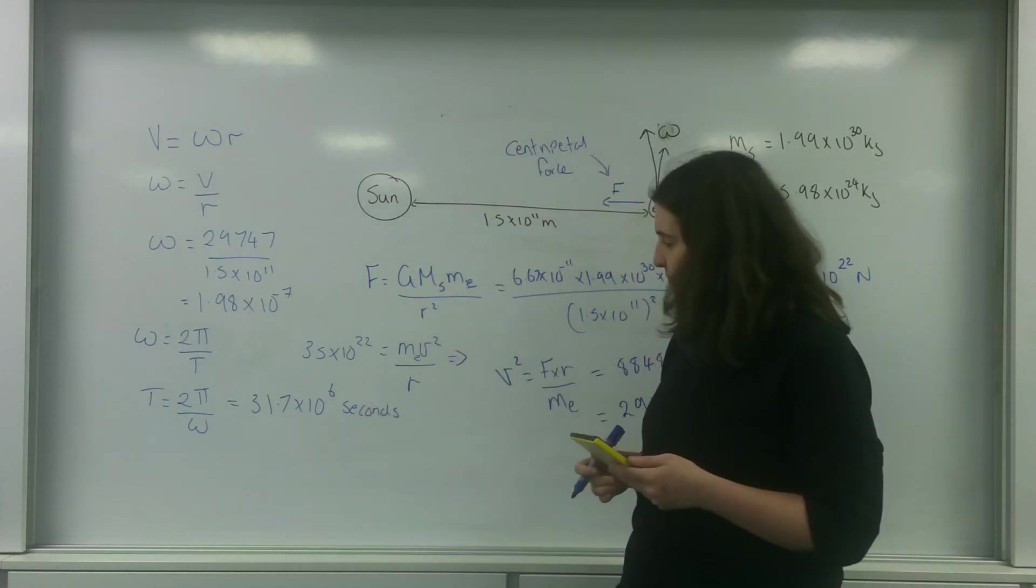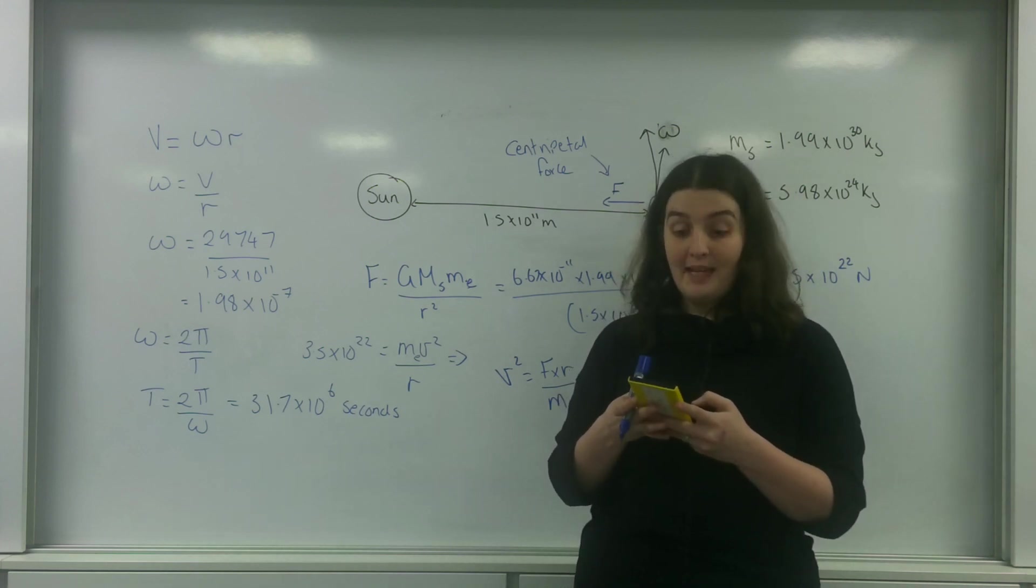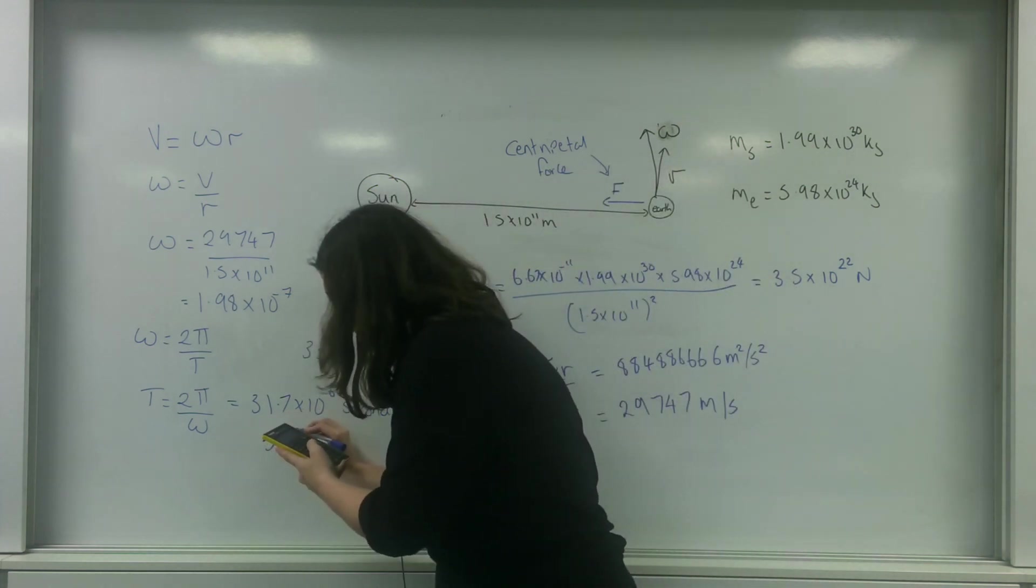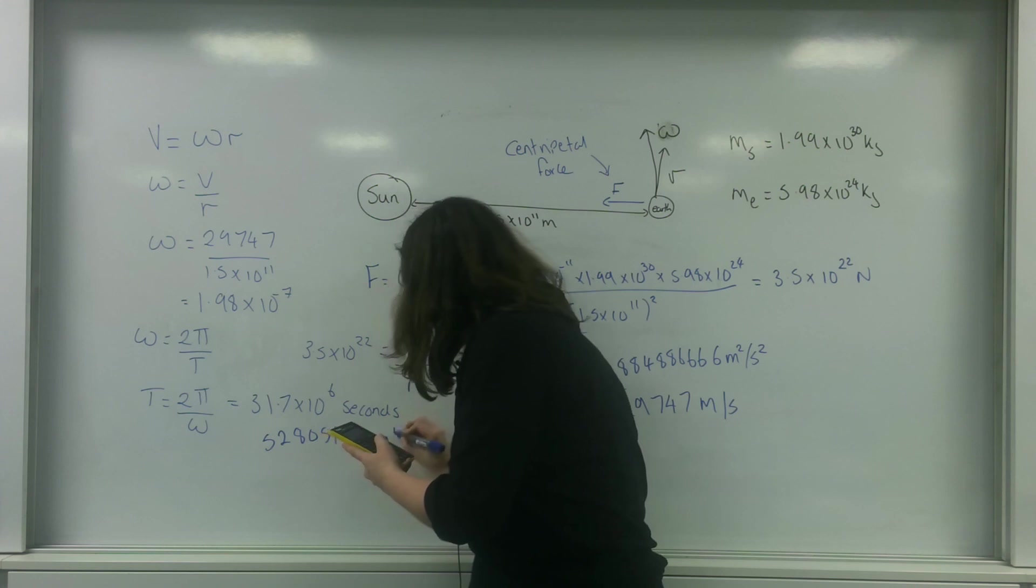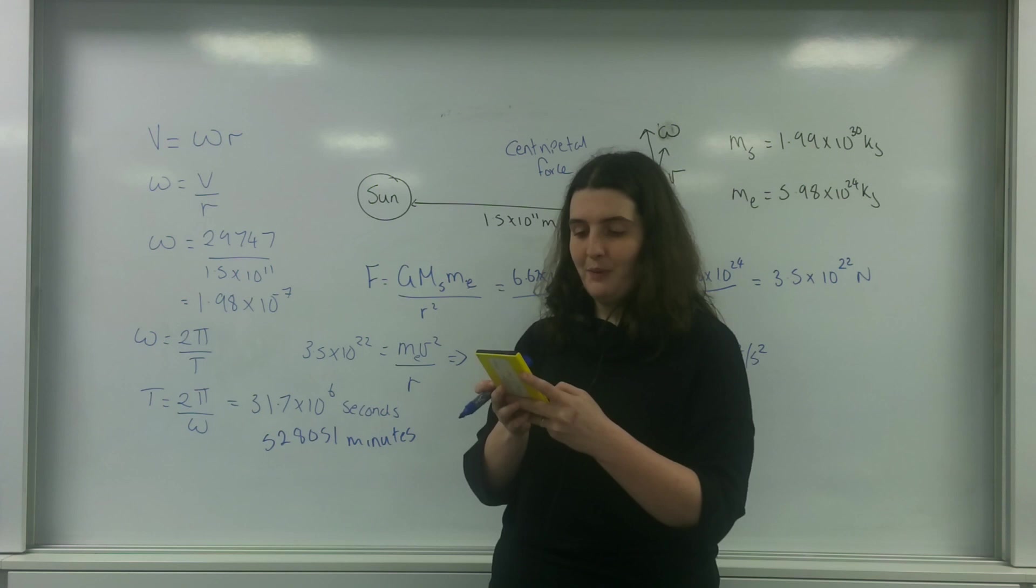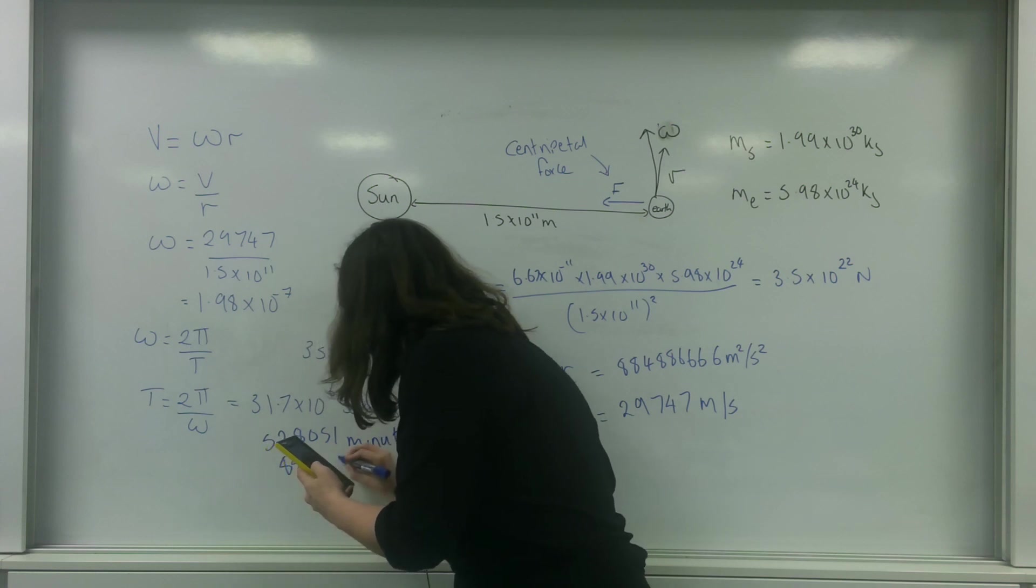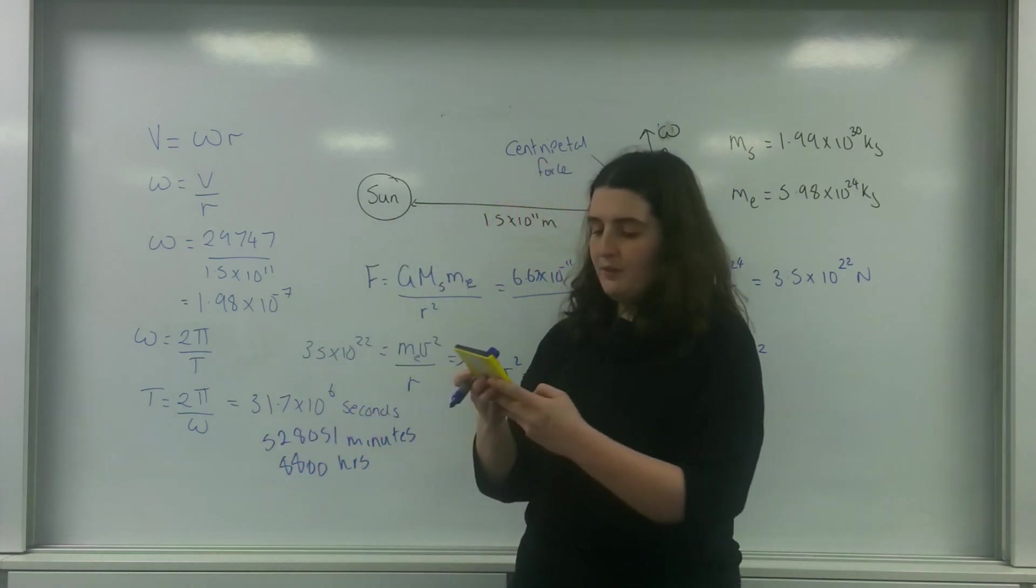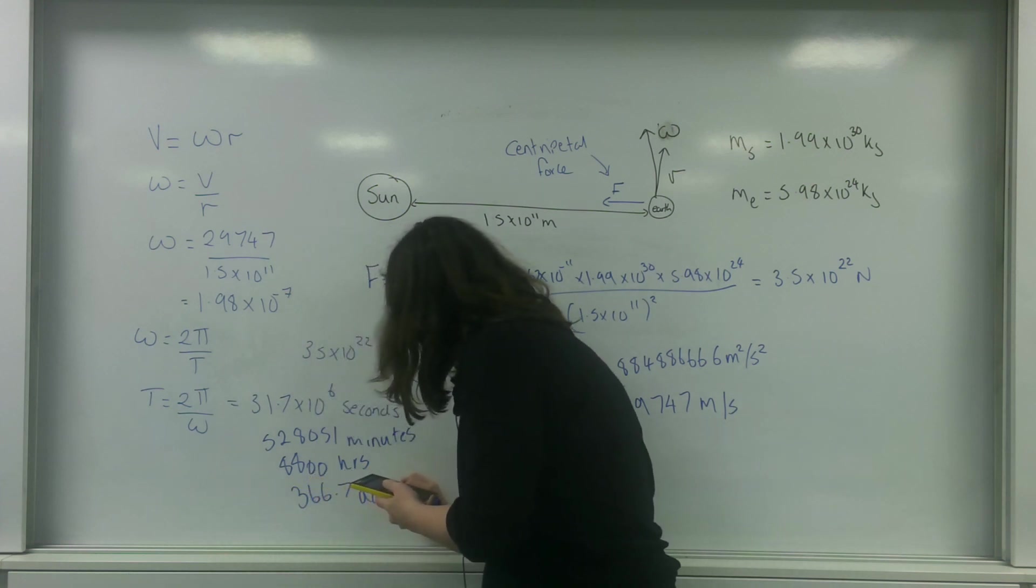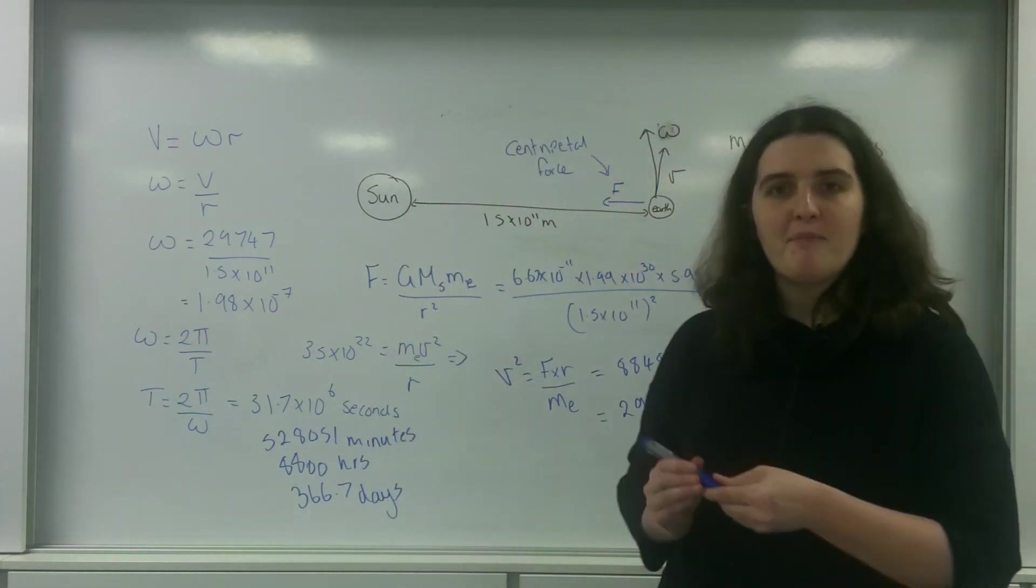If I divide that by 60 to get how many minutes, that is 528,051 minutes. Divide that by another 60 to get the hours, which is 8,800 hours. Divide that by 24, that is 366.7 days. 365 days a year. I don't think that's half bad at all.